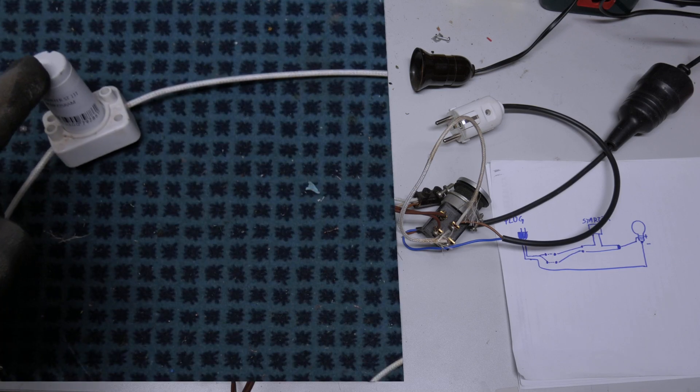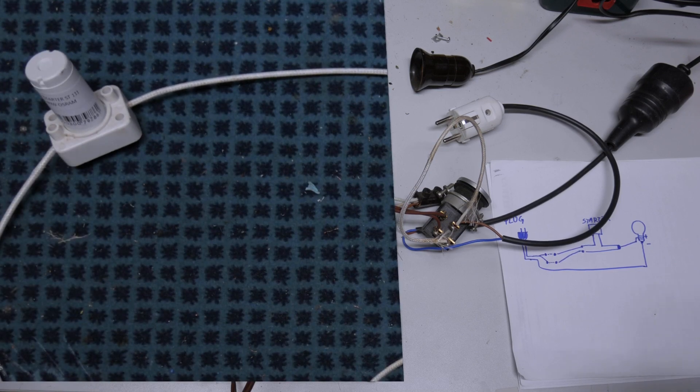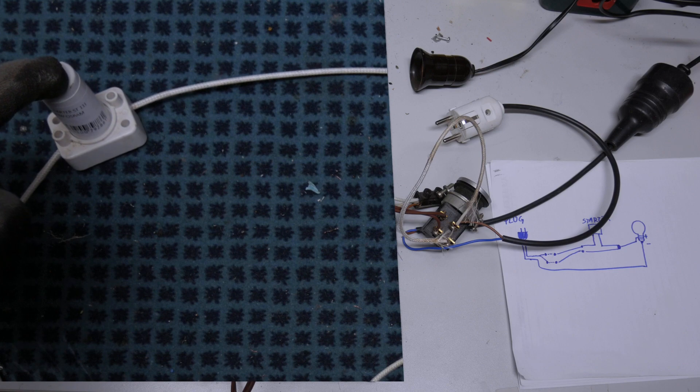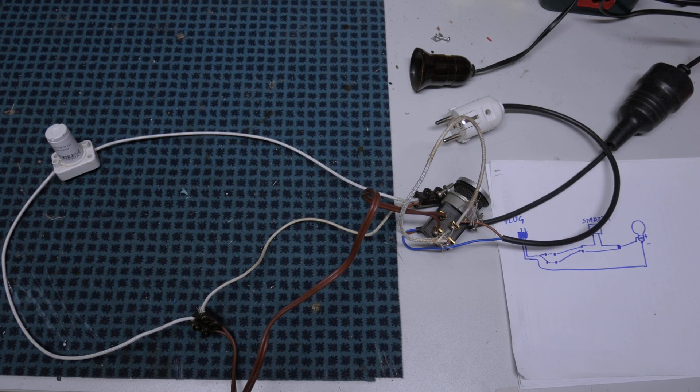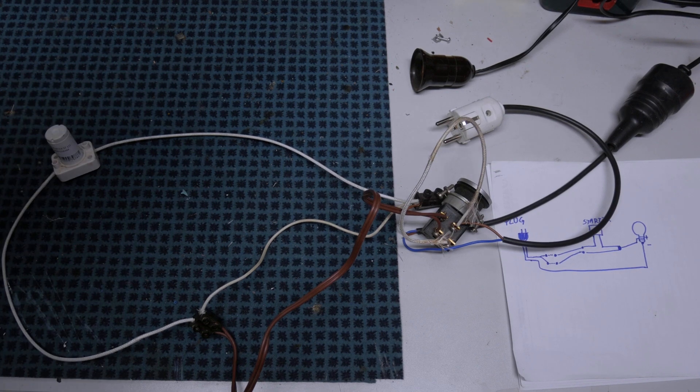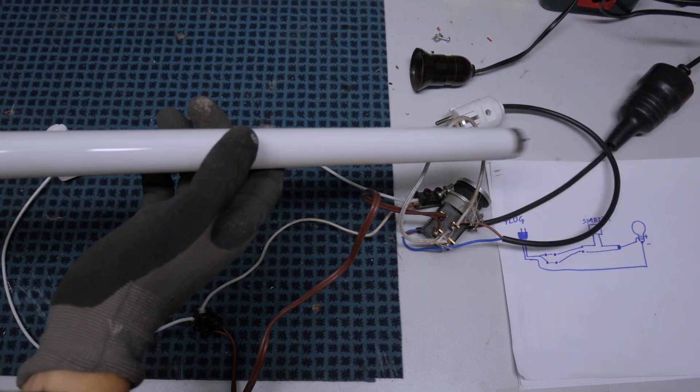And then what we also need is this guy. This guy is a starter and it usually is used with fluorescent light bulbs, which are long tubes. Let me just find one. So long tubes, something like this.